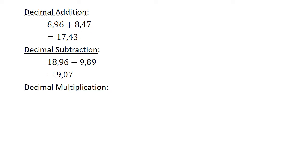Decimal multiplication. 0.8 times 0.06 equals 0.048. Decimal division.